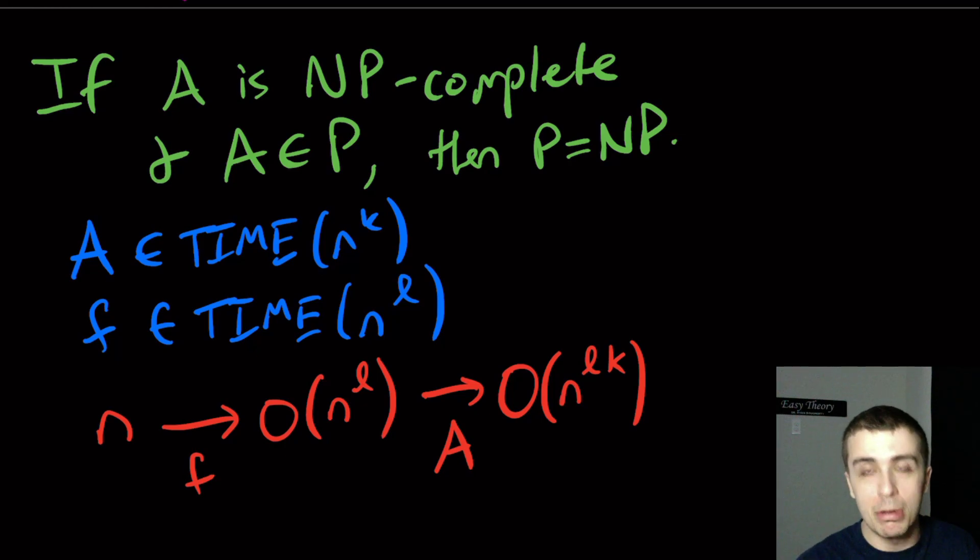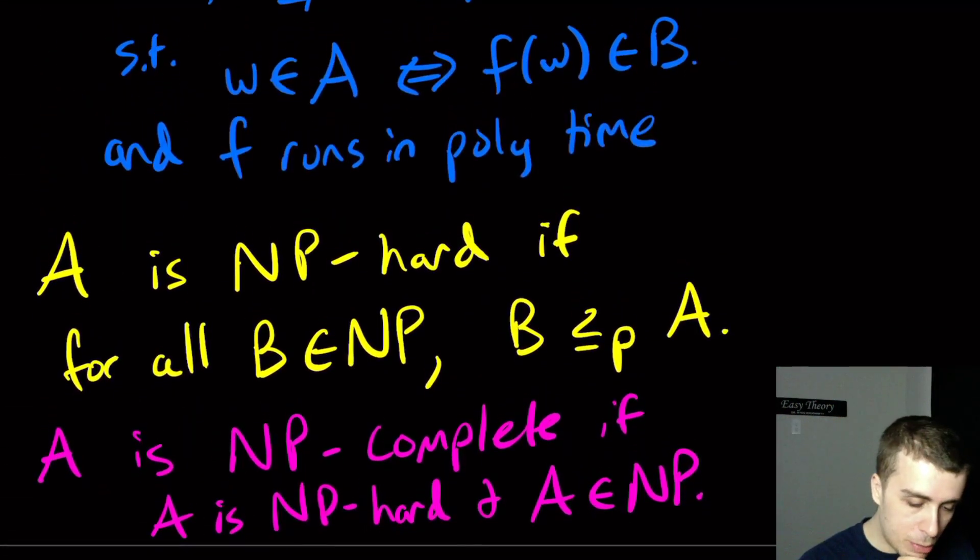And so therefore, this is the running time for the algorithm for B. And so B runs in polynomial time. And since every problem in NP reduced to A, then that means every single algorithm will take a polynomial amount of time for every problem in NP. And so therefore, we have concluded that if A is NP-complete and it's also in P, then P and NP are the same. So that would imply that A is in some sense the hardest problem in NP, because if it were in P, then P and NP would be the same.